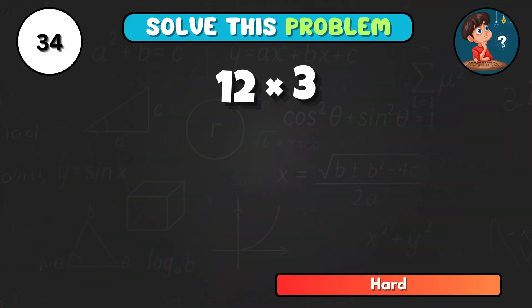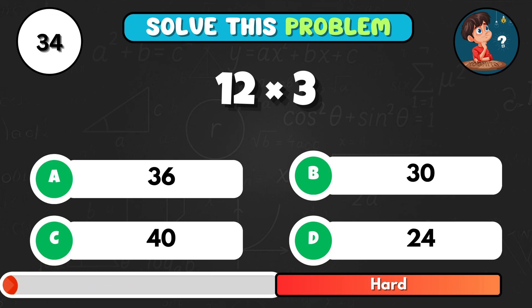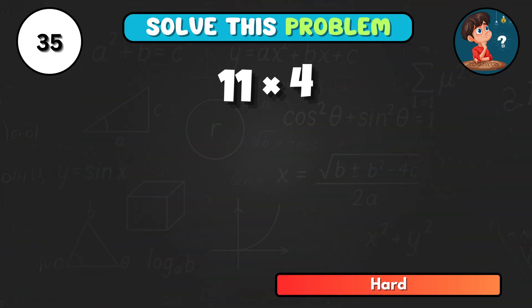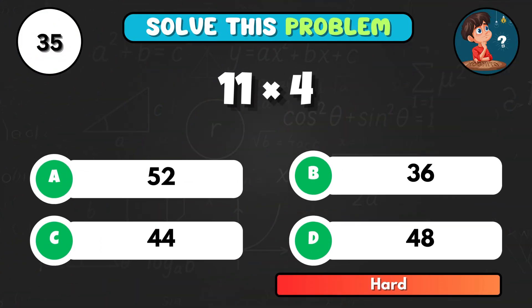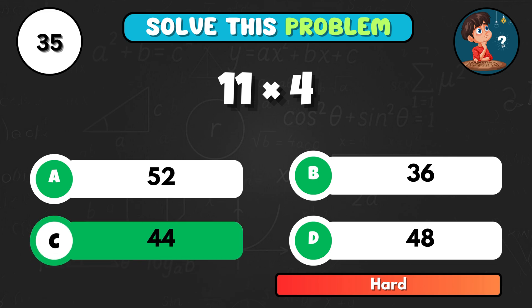What's 12 times 3? Think fast. It equals A, 36. Ready for this one. 11 times 4 equals... That's C, 44.